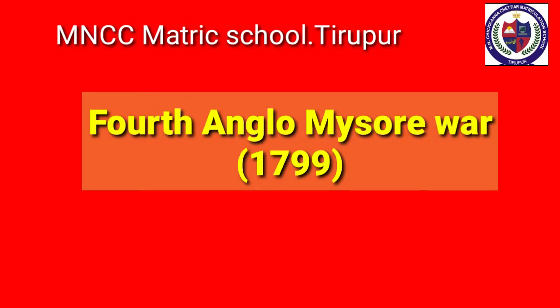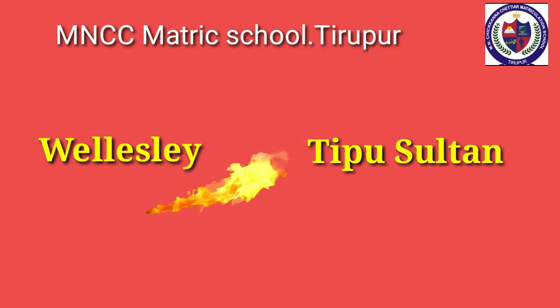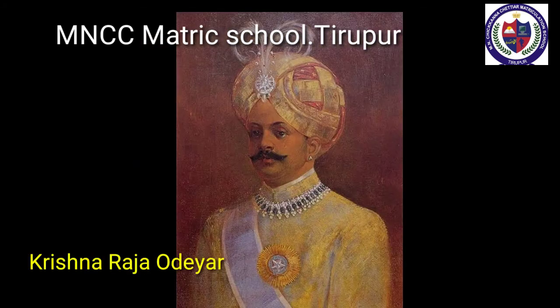The Fourth Anglo-Mysore War: Tipu Sultan did not forget the humiliating Treaty of Srirangapatnam imposed upon him by Cornwallis in 1792, so the Fourth Anglo-Mysore War started. Wellesley declared war against Tipu in 1799. As planned, the Bombay army under General Stewart invaded Mysore from the west. The Madras army, led by Arthur Wellesley, forced Tipu to retreat to his capital Srirangapatnam. On 4th May 1799, Srirangapatnam was captured. Tipu fought bravely but was killed. Thus ended the Fourth Anglo-Mysore War.